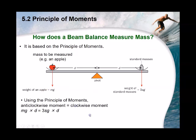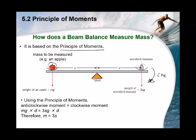A beam balance uses the principle of moments to measure mass. It has a pivot with a beam: the standard masses on the right and the item to be measured on the left. The anti-clockwise moment (from the apple) equals the clockwise moment (from the standard mass): force × distance on each side.